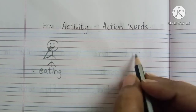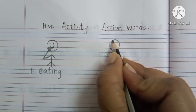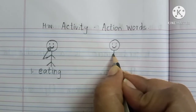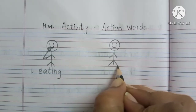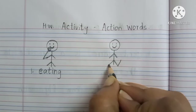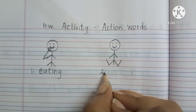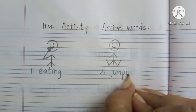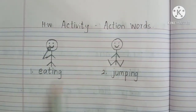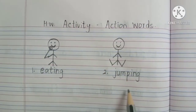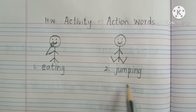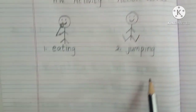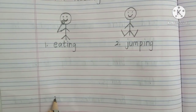The next one will be one more stick picture. You will be drawing their hands and their legs. In this way — this boy, what is he doing? He is jumping. J-U-M-P-I-N-G. These are all action words, so you can draw any of the action words like drinking milk, swimming, cooking, walking, running — anything, children.